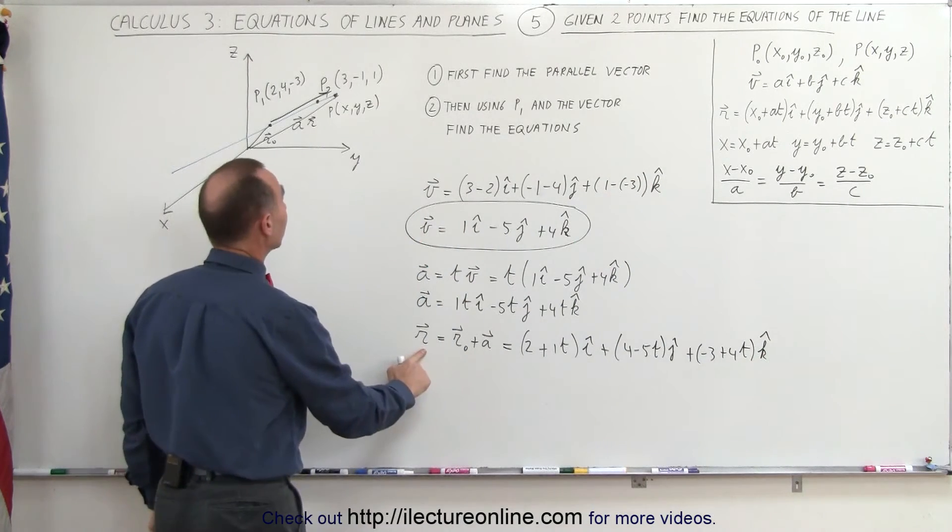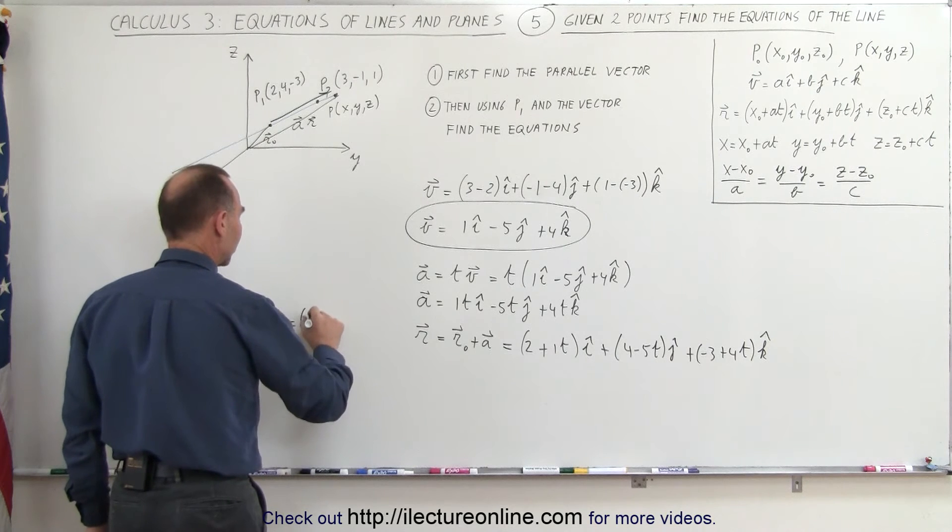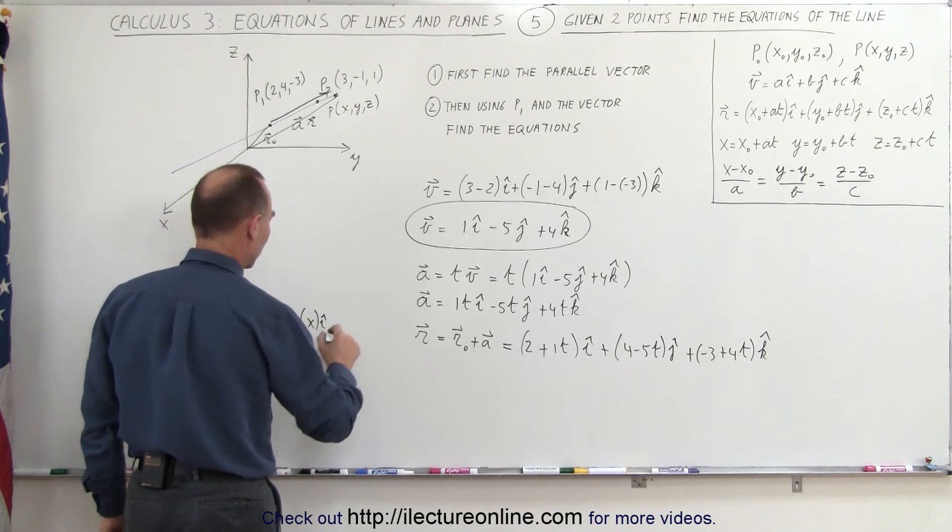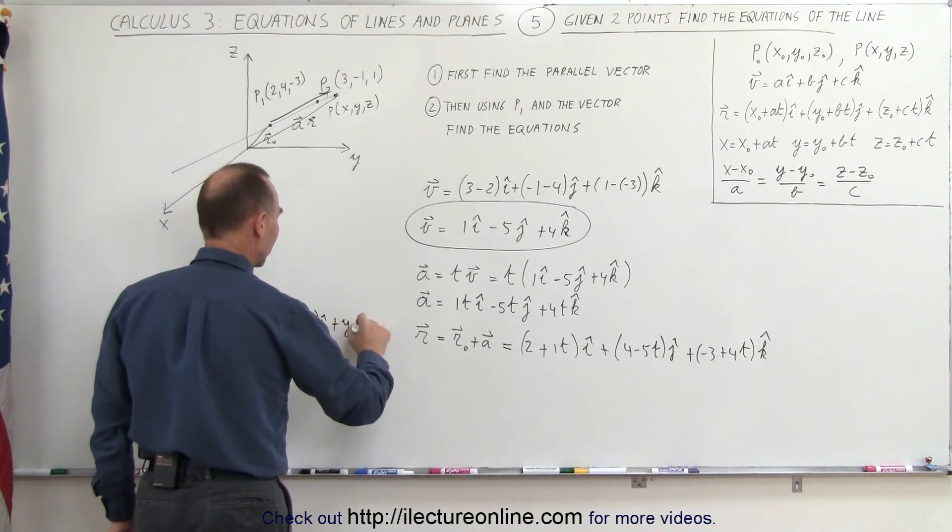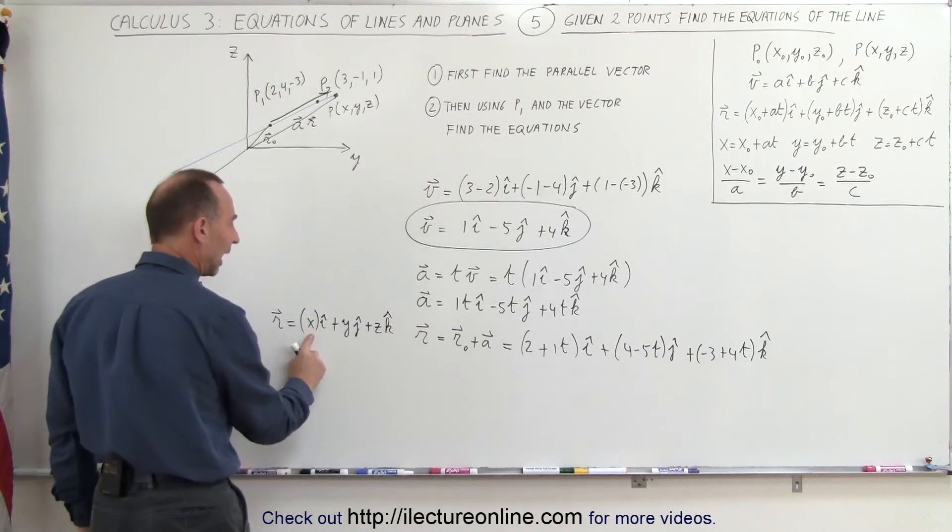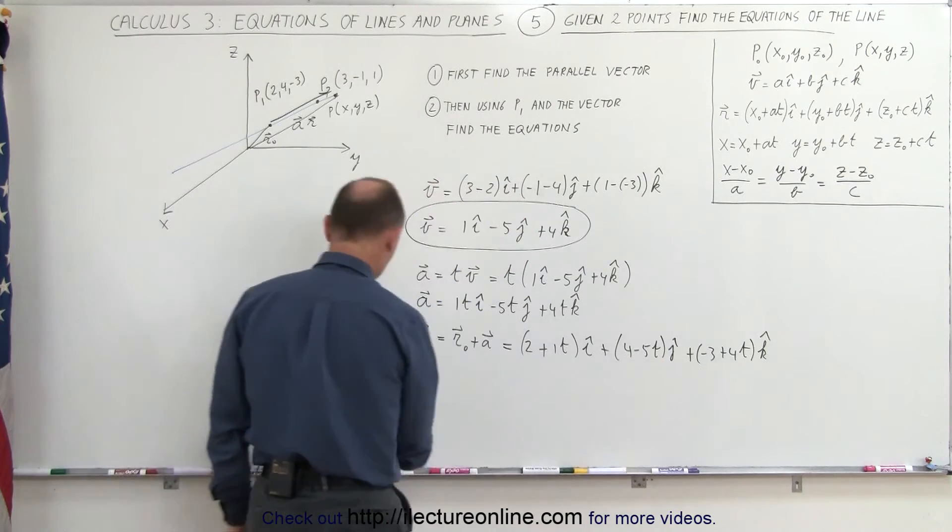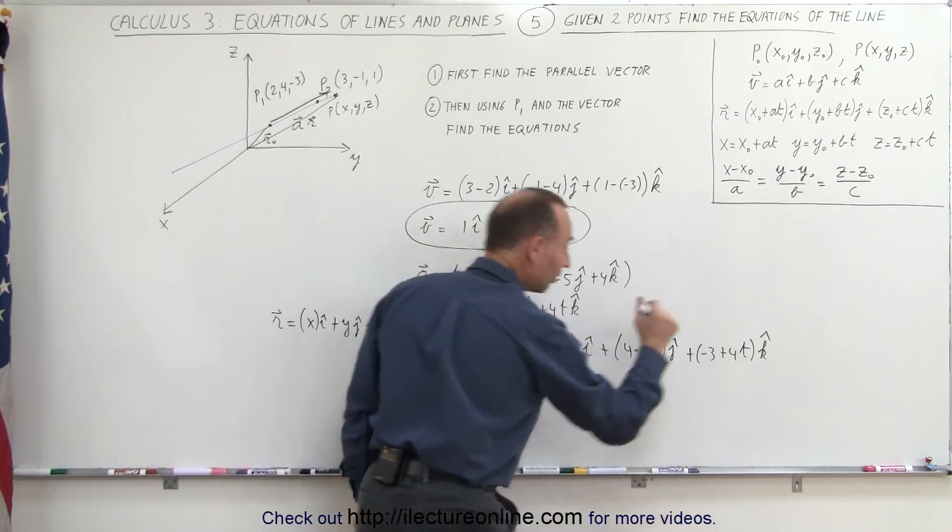And since the r vector can be written as x in the i direction, plus y in the j direction, plus z in the k direction, we can then say that x must be equal to this, y must be equal to this, and z must be equal to this. And that's how we develop our parametric equations.